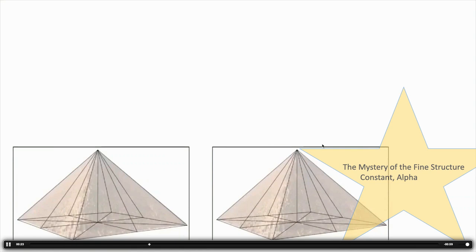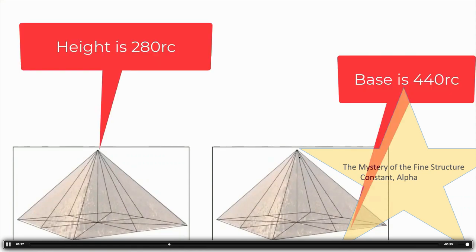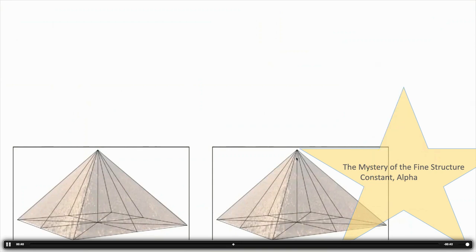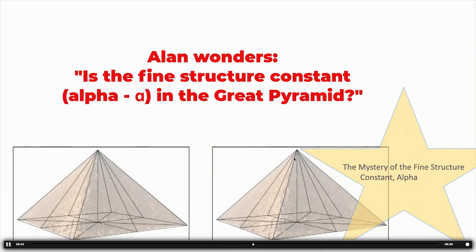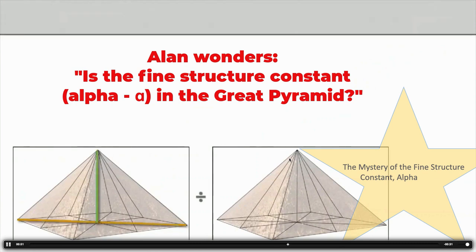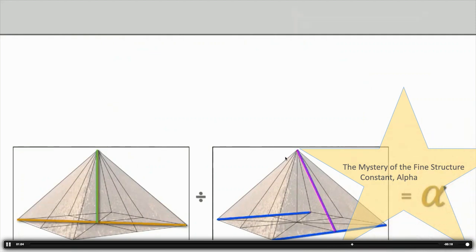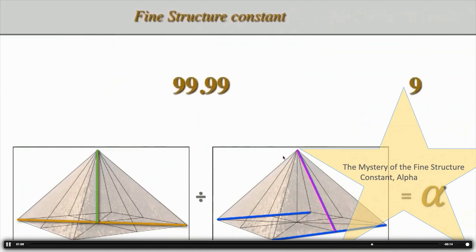Going back to the pyramid — taking just the basic proportions, not cherry-picking at all. The base is 440 cubits, the height is 280 cubits, and everything else follows from that. Everything else is literally inherent in those two basic numbers. So I wondered: is the fine structure constant in the pyramid, as well as those other constants? And it turns out to be this simple: height and diagonal divided by the side slope and twice the base gives you the fine structure constant to 99.9998% accuracy.